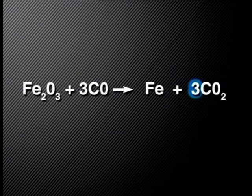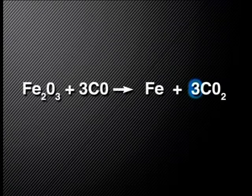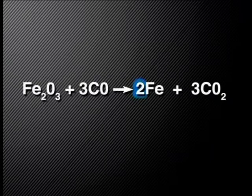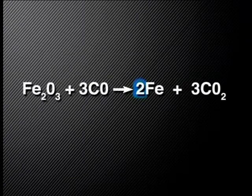Three times two is six. The oxygen and carbon atoms are now balanced. What about the iron? There are two atoms of iron on the left and one on the right. Balancing this is easy — we just write a large 2 in front of the Fe. This gives us a balanced chemical equation that represents the chemical change taking place inside the blast furnace.